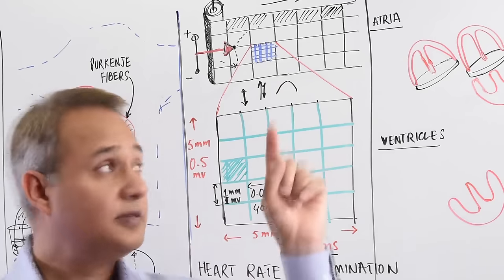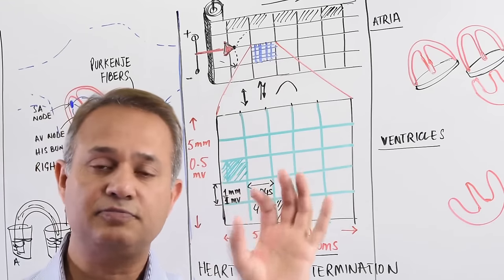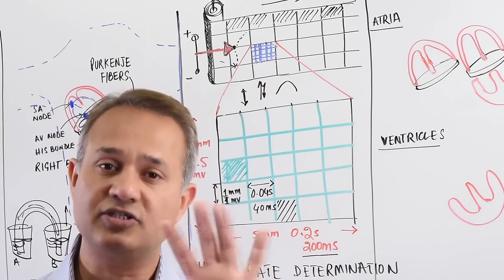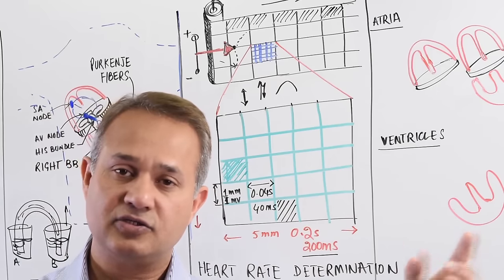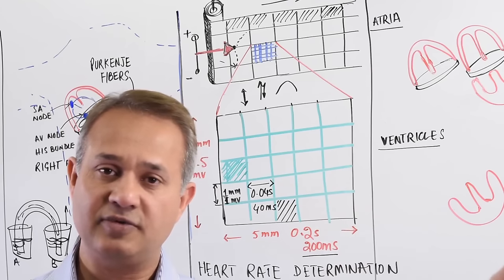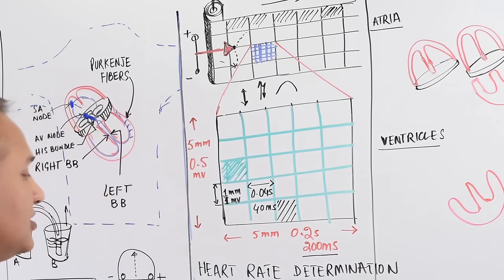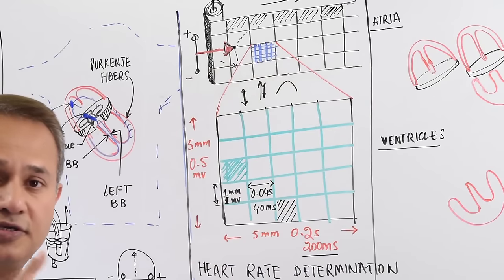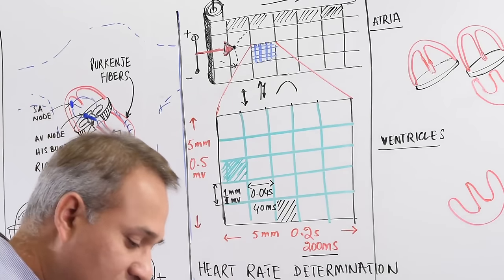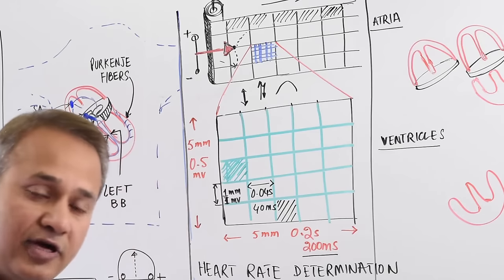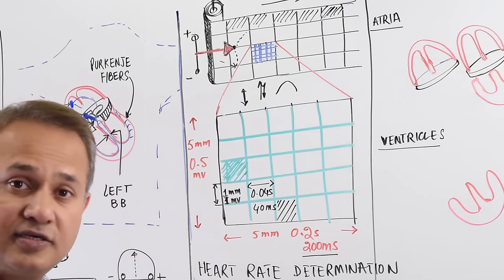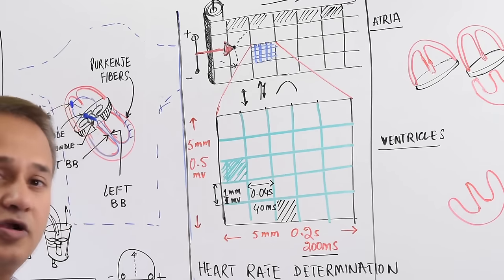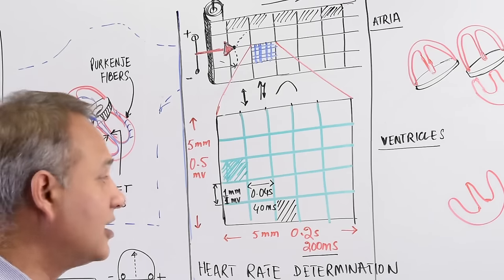Paper speed is 25 millimeters per second, meaning 5 big boxes per second. In 60 seconds, 5 × 60 = 300 boxes pass through the machine in one minute. You can count all QRS complexes across 300 boxes to get heart rate, but normally you don't do a full one-minute ECG strip just to get heart rate — there are easier methods.